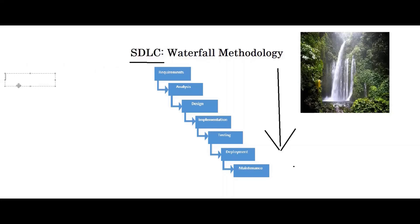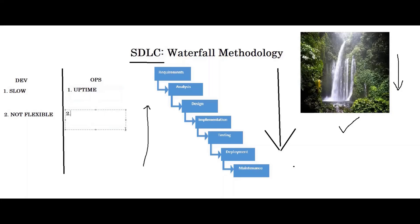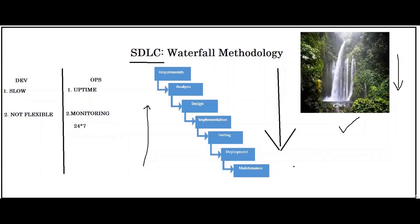The challenges faced by the development team: first, it was a very slow process — for example, if the coding was completed, it did not immediately go for testing; it used to take months. The second challenge was that this methodology was not flexible — there was no going back; it just goes in one direction, which is why it is called waterfall. The challenges faced by the operations team were: first, uptime — they needed to maintain server uptime for a very long duration. Second was monitoring — you cannot monitor the infrastructure 24x7 without a monitoring tool. So these are all the challenges faced by both teams due to waterfall methodology.